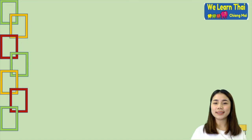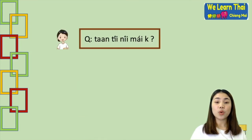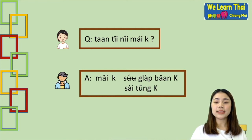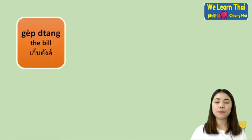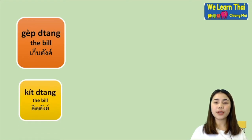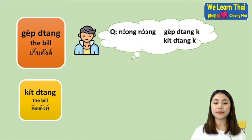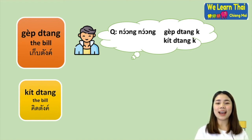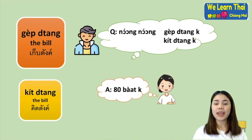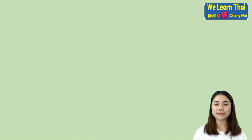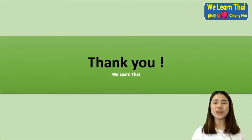รอสักครู่ค่ะ — wait a moment. Or if you want to ask about eating in: ทานที่นี่ไหมคะ — would you like to eat here? ไม่ค่ะ ซื้อกลับบ้าน — no, takeaway. Or you can say ใส่ถุง — put in a bag. เก็บตัง or คิดตัง means the bill. น้องๆ เก็บตังครับ or น้องๆ คิดตังครับ — you use the word น้อง to call a younger waiter or waitress. แปดสิบบาทค่ะ — 80 baht. Alright, thank you for watching my video, bye bye.